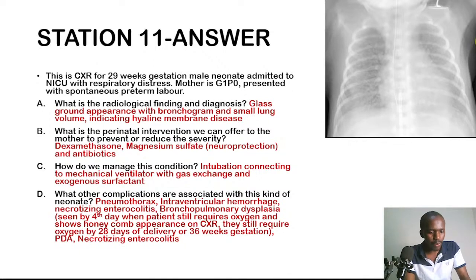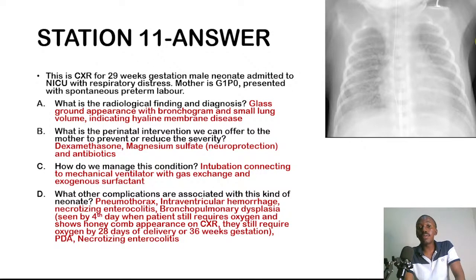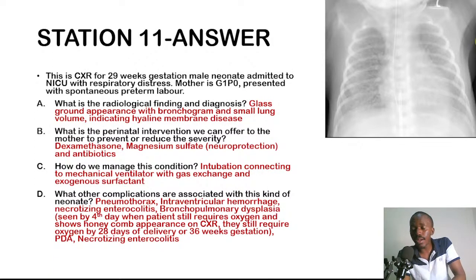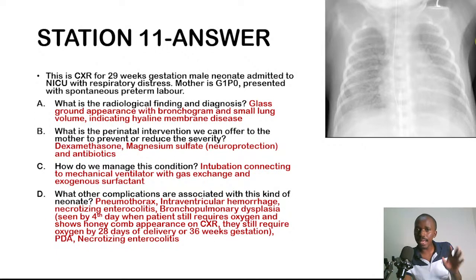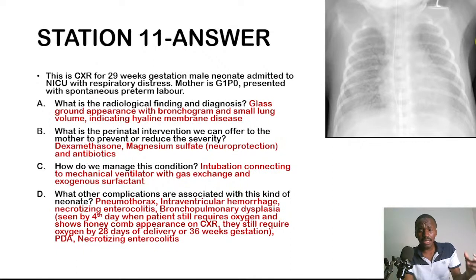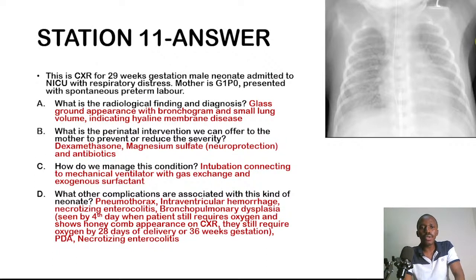Perinatal interventions: give antenatal dexamethasone (promotes lung maturation); magnesium sulfate (neuroprotective — premature infants are at risk of intraventricular hemorrhage); and antibiotics. Management: intubate and connect to mechanical ventilator; administer exogenous surfactant — because the core problem in hyaline membrane disease is insufficient surfactant production in the premature lung.